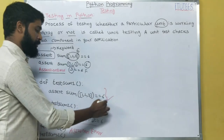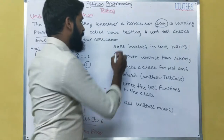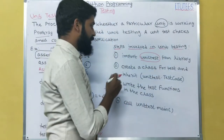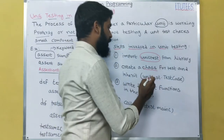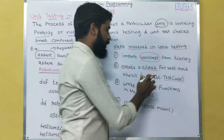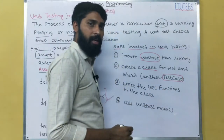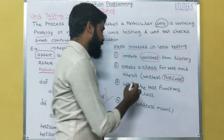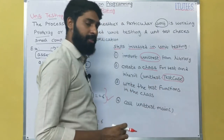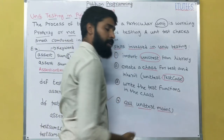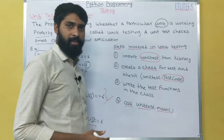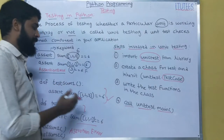Now we are going to check these units using unit testing in Python. The steps involved in unit testing are: first, import unittest from the library; second, create a class and inherit it from unittest.TestCase — this is the predefined class; third, write the test functions in the class; and fourth, call unittest.main() to run the test cases.